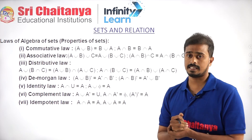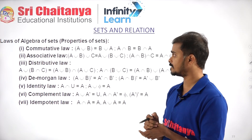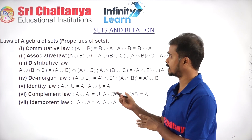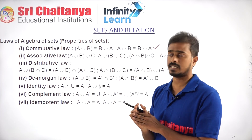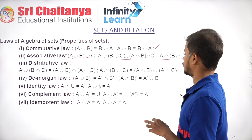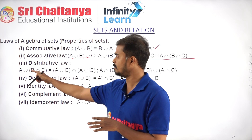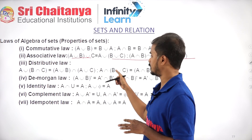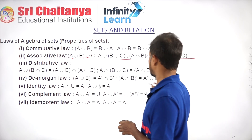Next chapter: India — Sets and Relations. Both union and intersection satisfy commutative property and associative property. Distribution: union can be distributed over intersection, and intersection can be distributed over union.